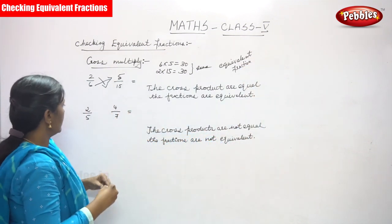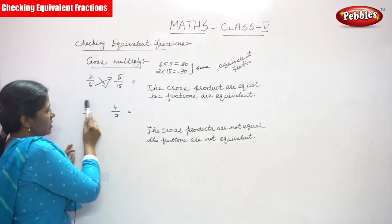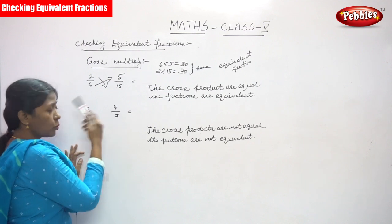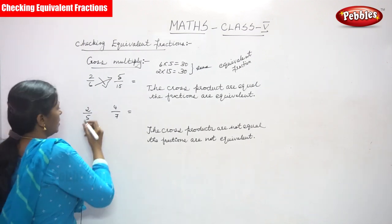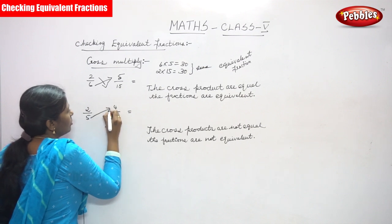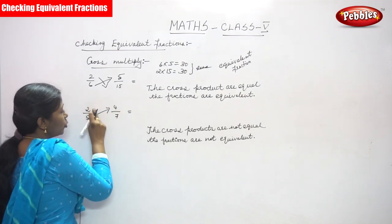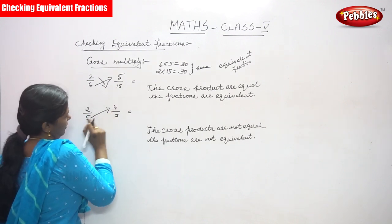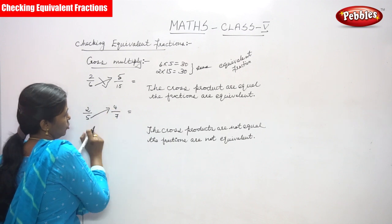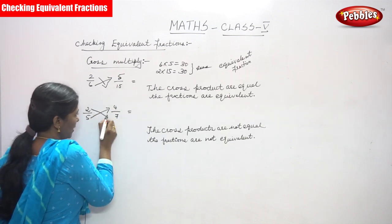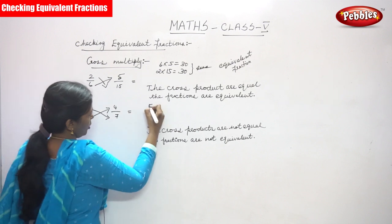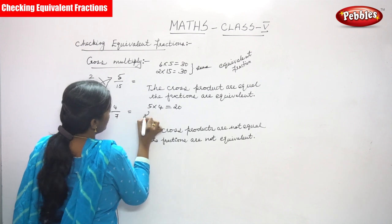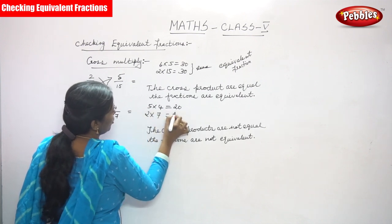The next example is 2 by 5 and 4 by 7. The first fraction is 2 by 5 and the next fraction is 4 by 7. We have to multiply the cross products. That is, the denominator 5 of the first fraction is multiplied with the numerator 4 of the second. And the numerator 2 is multiplied with the denominator 7. So 5 into 4 gives you 20.